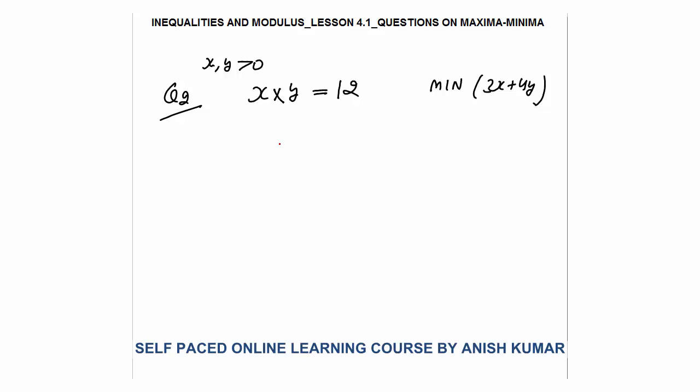Question number two: x and y are positive real numbers. It is given that x × y = 12. You need to find the minimum value of 3x + 4y. Here we will apply the second concept.